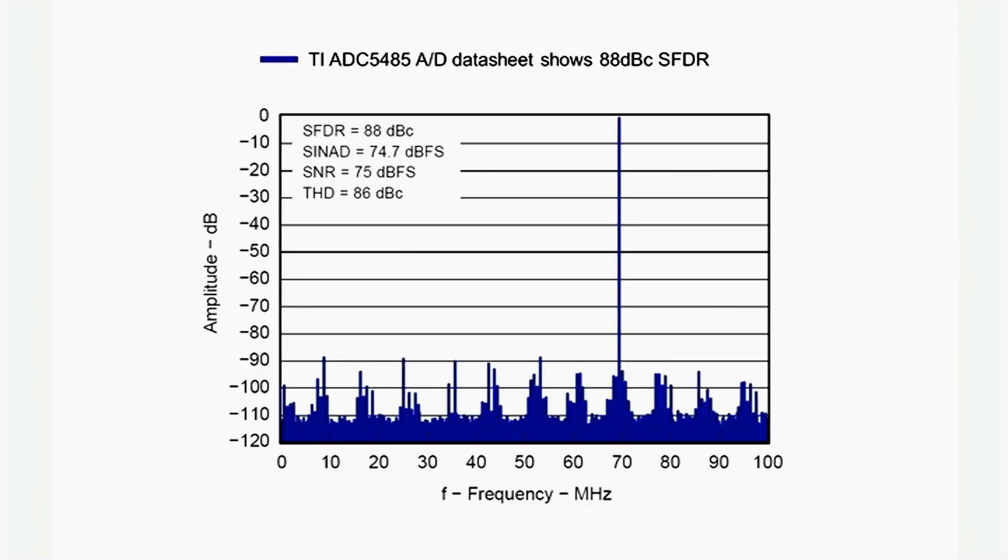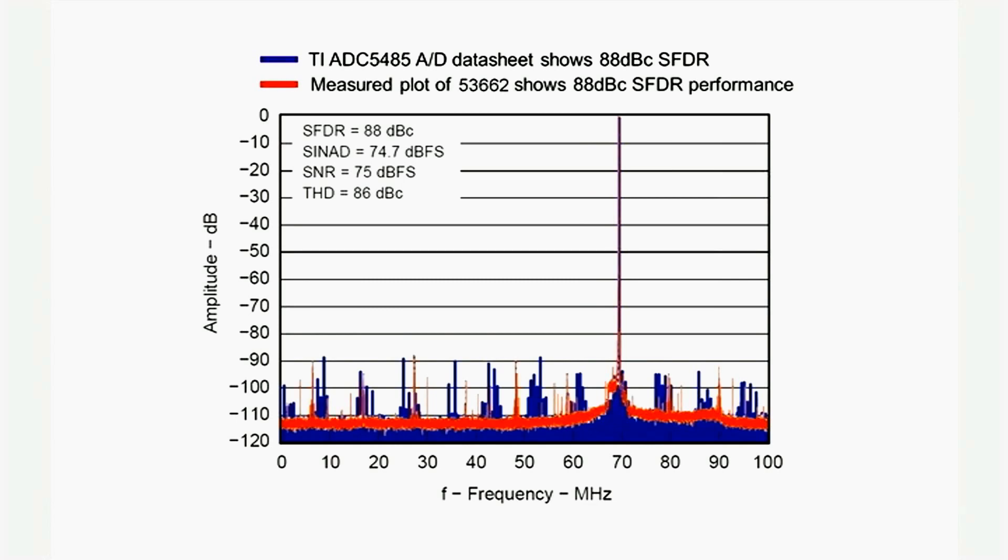In this case, the data sheet for the Texas Instruments ADC5485 converter used on the 53662 shows an SFDR of 88 dBc. Pentex's careful attention to PCB layout and overall product design allows us to maintain the converter's excellent performance on the 53662.